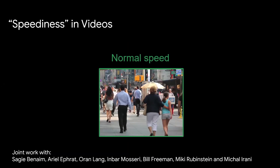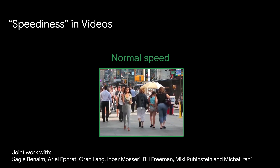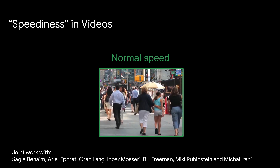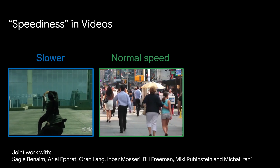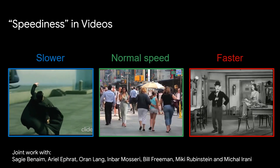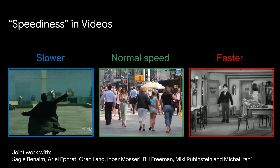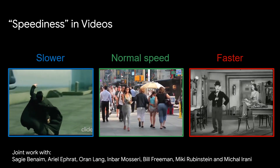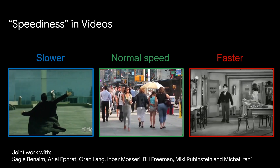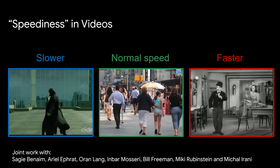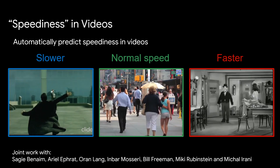When we watch people moving in a video, we can easily tell their speediness — whether they are moving at normal speed, slower than normal, or faster than normal. We can do so because we've watched people moving for many years; we have prior knowledge about how they move in the world and what their natural rate of motion is. In this work, our goal is to automatically predict speediness in videos.